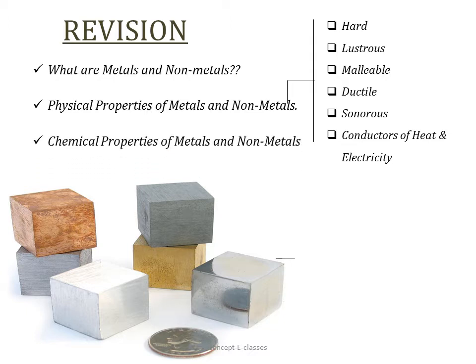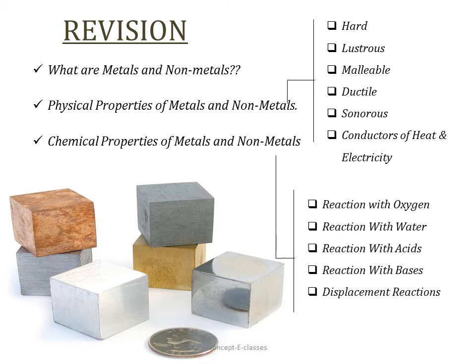Then we saw the chemical properties of metals and non-metals. When metals react with oxygen they form metal oxides, which are basic in nature, and non-metal oxides are acidic in nature. When metals react with water they form respective oxides and hydroxides, whereas non-metals do not react with water. Metals react with acids to form hydrogen gas, whereas non-metals do not react with acids. Metals react with bases to form hydrogen gas, whereas reactions of bases with non-metals are quite complex.